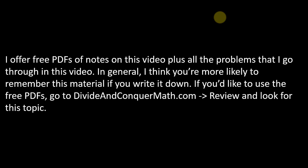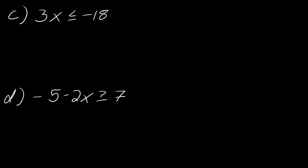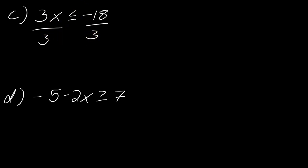I offer free PDFs of notes for this video at divideandconquermath.com in the review section. Now for example c: 3x ≤ -18. I'll divide both sides by 3. The key question: am I dividing by a negative number? No — I'm dividing by 3, which is positive. Sometimes people see a negative number and want to flip the inequality, but don't. So this gives x ≤ -6.